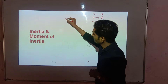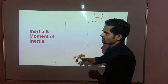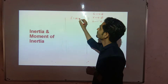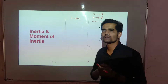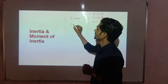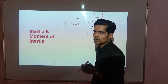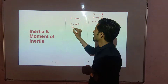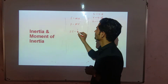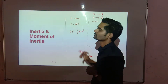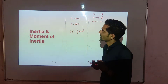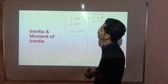In linear motion, some of the important relations are: Newton's first law — force is equal to mass times acceleration. Second, linear momentum is the product of mass and velocity. After that, kinetic energy of a linearly moving body is half m v squared. Now, if you want to apply the same relations to rotational motion, it is very important to know the rotational analog of mass.